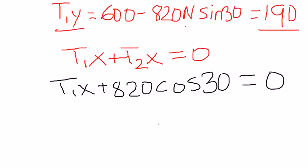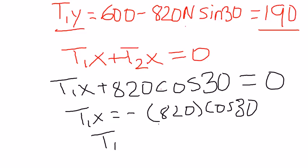If you do the algebra with cos 30, tension 1 of the x-axis is going to be negative 710.1408.